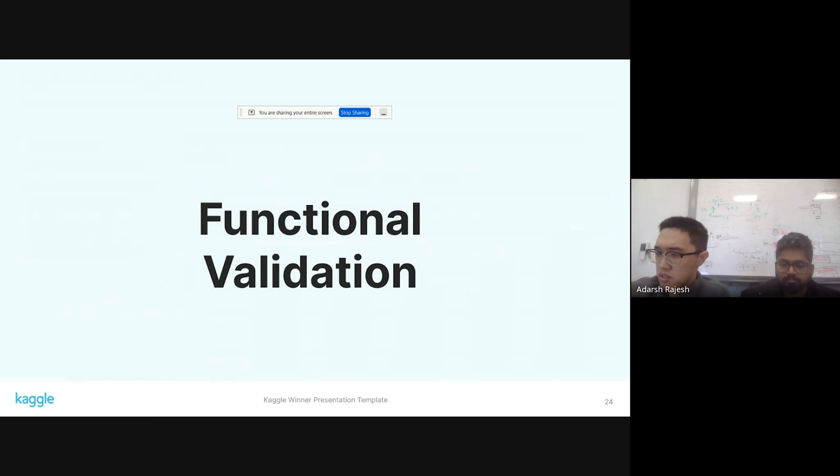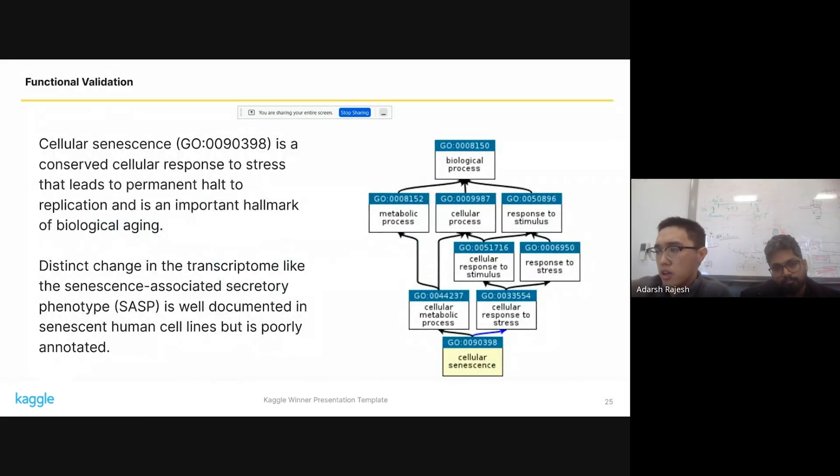So one last thing that we try to look at is functional validation. So our lab is interested in cellular senescence, and so are we. And this is a biological process, which is a conserved cellular response to external stress. And it's characterized by this permanent halt to the cell cycle and replication, and it's an important hallmark of aging. So as part of the process of cellular senescence, there's a very distinct change in the transcriptome of these cells, which is called the senescence-associated secretory phenotype, or SASP. And this is very well documented in these human cell lines, which have undergone senescence. But in the literature, it's not that well annotated, these genes.